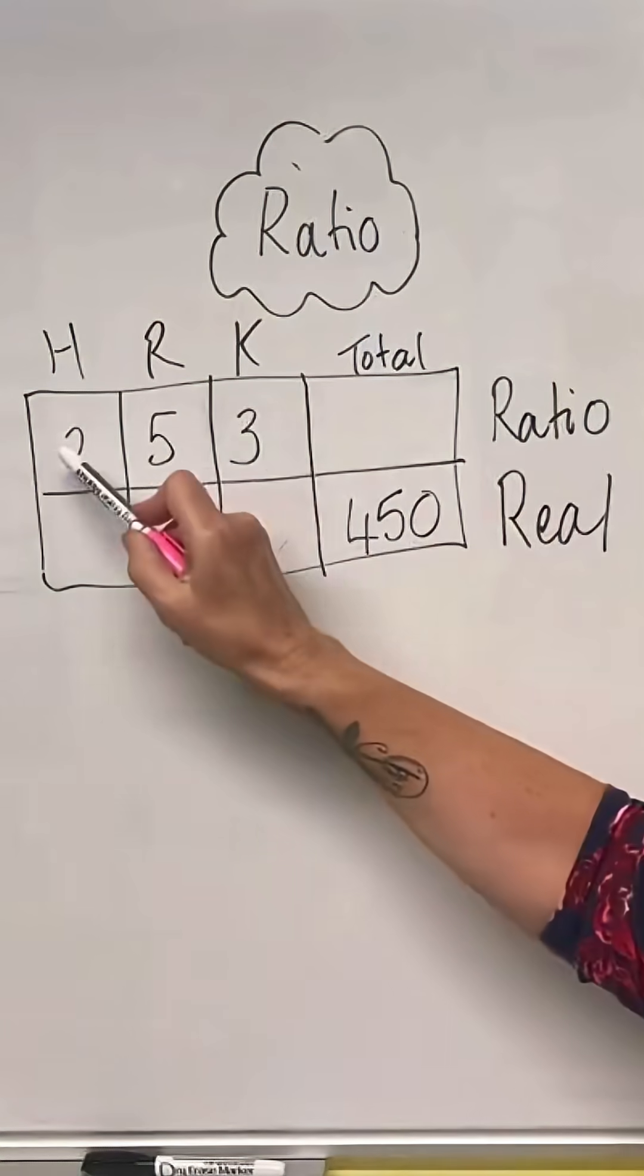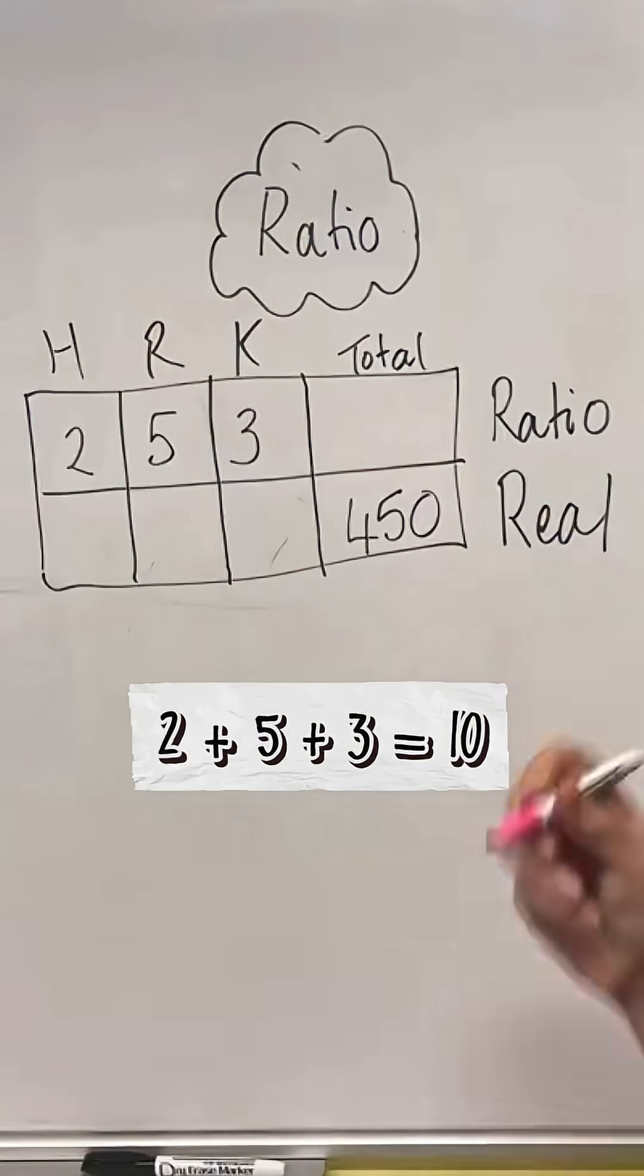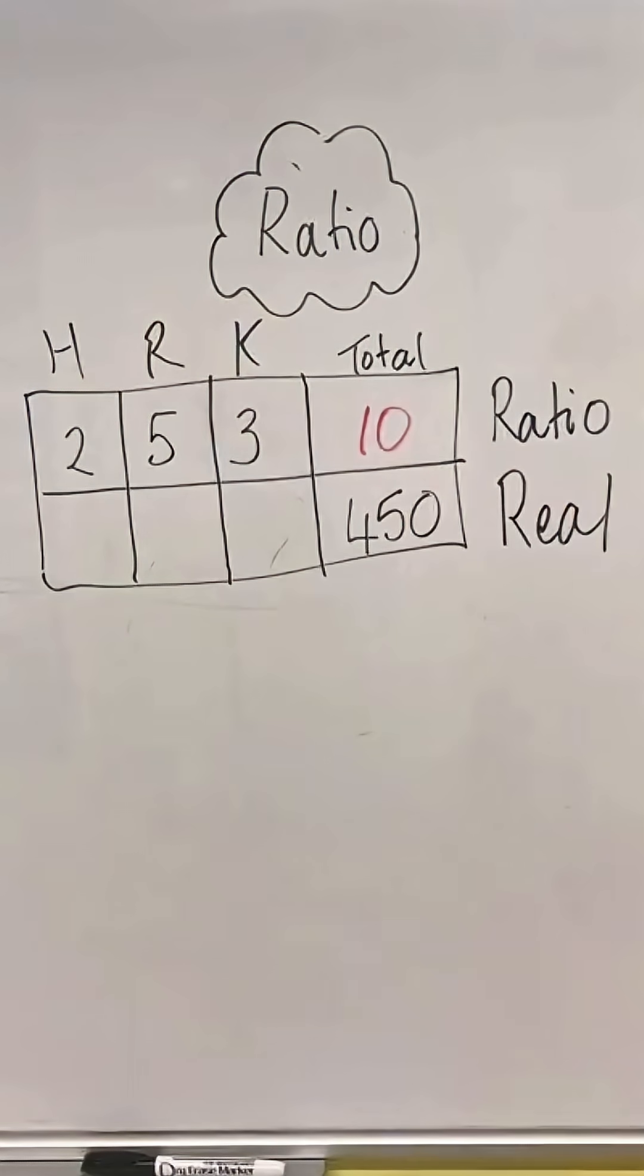Now I'm going to find the total of my ratio: 2 add 5 add 3 is 10. Then I need to say what do I times 10 by.